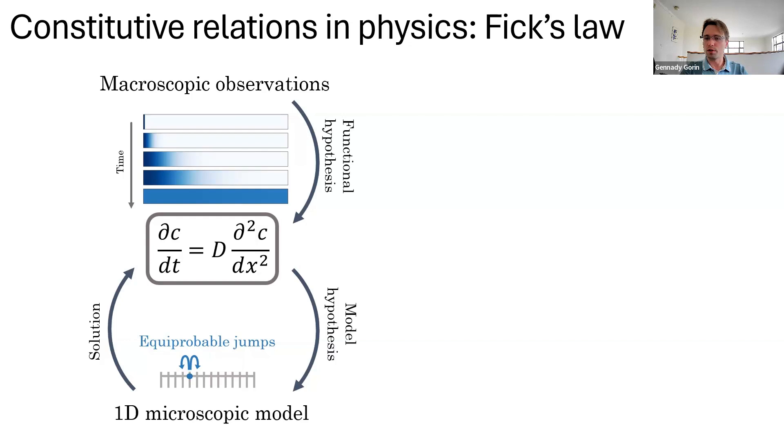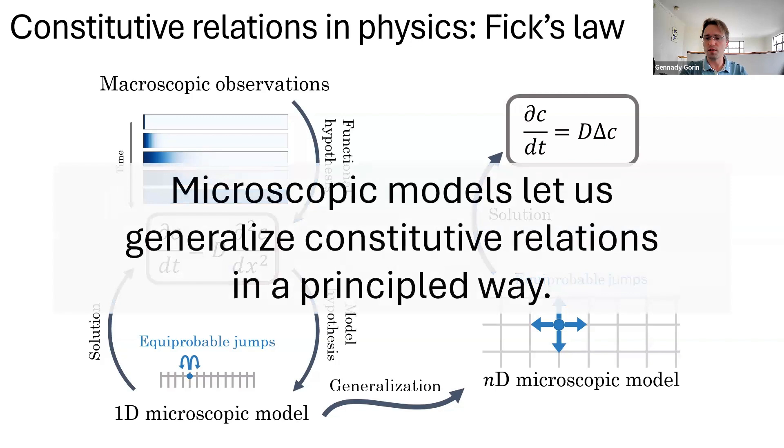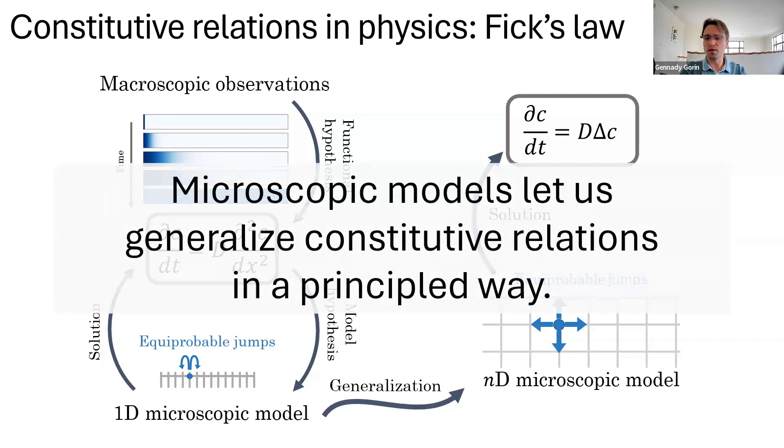But once we have that first principles model, we're no longer restricted to 1D. We can define a multidimensional grid endowed with precisely the same dynamics, solve the system, and discover the general form. Now, we'd never do this for Fick's law. That's quite well understood. But the key takeaway for sequencing is that if we have a microscopic model, we can generalize constitutive relations in a principled way. There's a right way to do so.